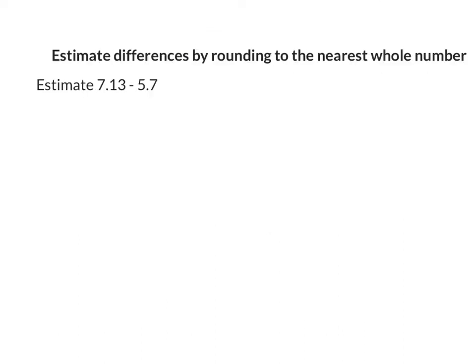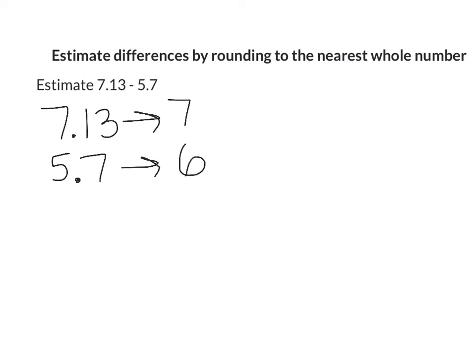For the next example, we're estimating differences by rounding to the nearest whole number. We have 7 and 13 hundredths minus 5 and 7 tenths. 7 and 13 hundredths is between 7 and 8, and it's much closer to 7, so it rounds to 7. 5 and 7 tenths is between 5 and 6, and since it's greater than 5 and a half, we round up to 6. So 7 minus 6 gives us an estimated difference of 1.